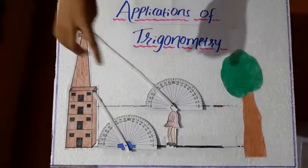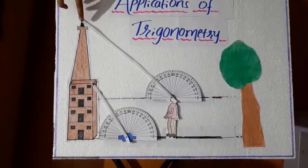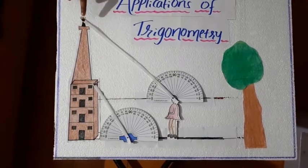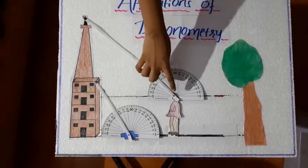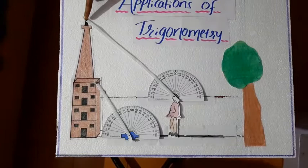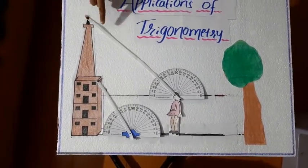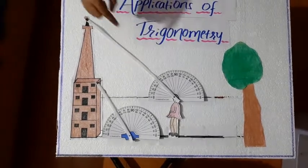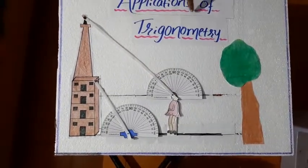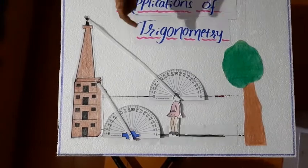So, now let us consider that in the top of the building, another girl is standing and she is looking at this girl. At the time, her horizontal line will be here at zero degree. And line of sight is below the horizontal. That's why we call this angle as angle of depression.